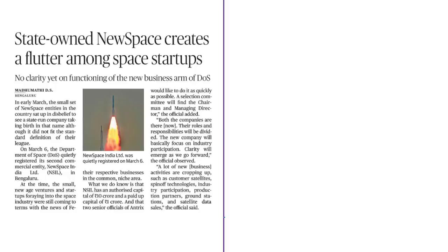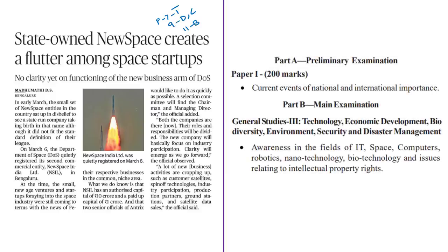The next article appears on page 7 in Thiruvananthapuram edition, page 9 in Delhi and Chennai, and page 11 in Bangalore edition. The article is about the new commercial entity of the Department of Space named New Space India Limited. It is helpful in prelims preparation under current events of national importance and in mains under GS Paper 3 under awareness in the field of space.